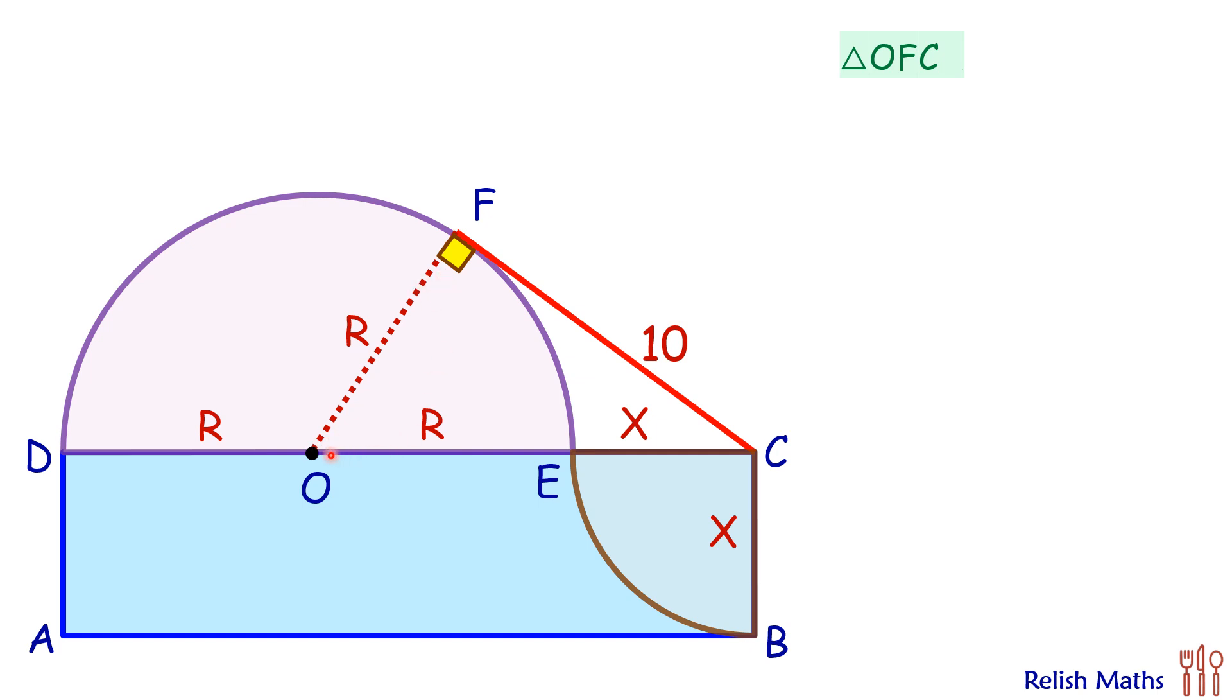Now here if you look at the triangle OFC, it's a right-angle triangle. Applying Pythagoras theorem, so OC square will be equal to OF square plus FC square. Putting the values, OC is R plus X, OF is R, and FC is 10.